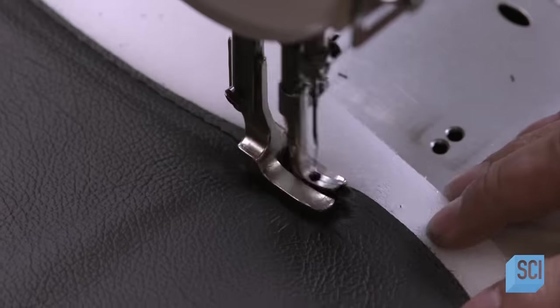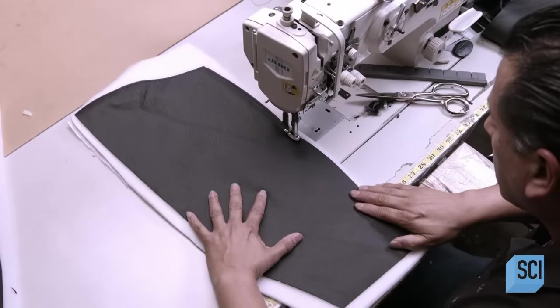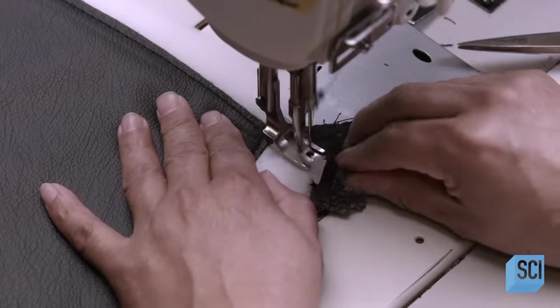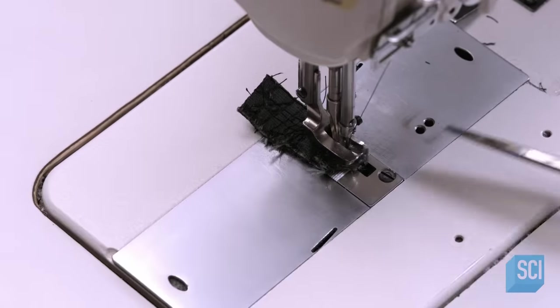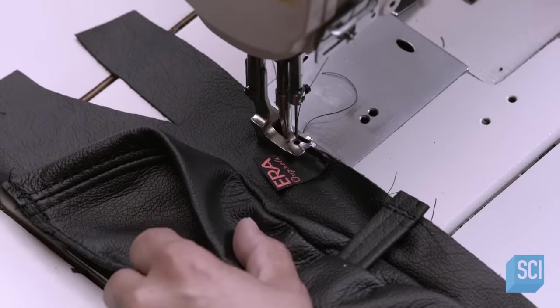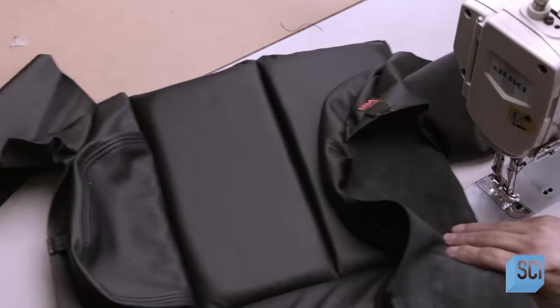He stitches the padding flat to many of the other pattern pieces. This particular part is a side panel for the back of the chair. Returning to the upholstery with the ribbing now, he sews contoured casings to each side.